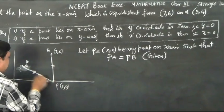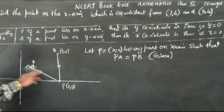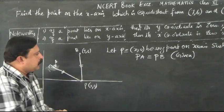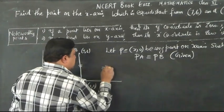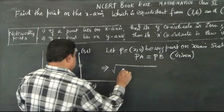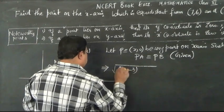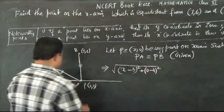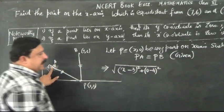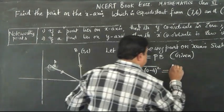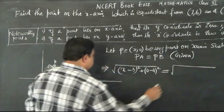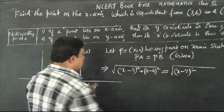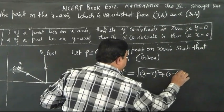PA is the distance between points P and A, and PB is the distance between points P and B. This is a problem on the distance formula. So PA equals square root of (x minus 3) squared plus (0 minus 4) squared, and PB equals square root of (x minus 7) squared plus (0 minus 6) squared.